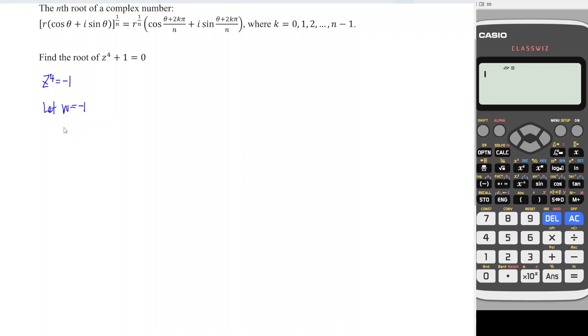So we have r is equal to, from here as we can see, this is the real part for any complex number, we will have real part and imaginary part. So which means that for this case, we will have negative 1 plus 0i.